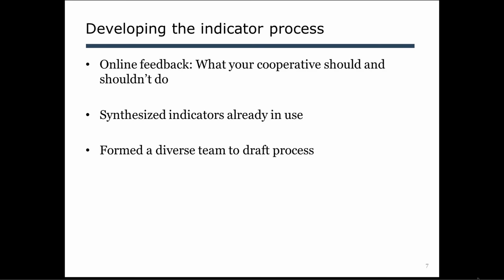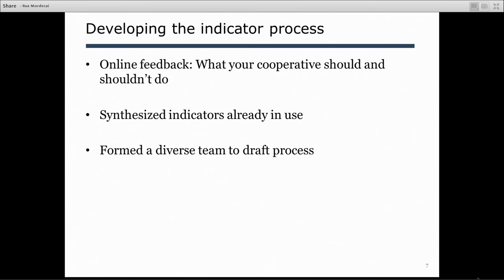We started figuring out our process with a big online feedback survey from our web community, trying to tap into expert knowledge. Using and developing indicators isn't a new thing, so the first thing we did was a broad survey out to everyone asking: what should your cooperative do and what shouldn't it do with indicators? That helped frame the whole process. Then we started synthesizing existing information — what are people already using? — and got together a diverse team to draft the process, including definitions and rules.